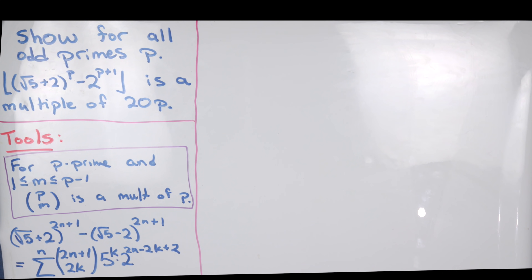Let's see what our tools are. We'll have two main tools here. The first involves binomial coefficients, and that says for p prime and m between 1 and p minus 1, p choose m is a multiple of p. We will not prove this — I've proved it a couple of times earlier on the channel, and there are probably many proofs you could find on YouTube or elsewhere for this fairly simple result.